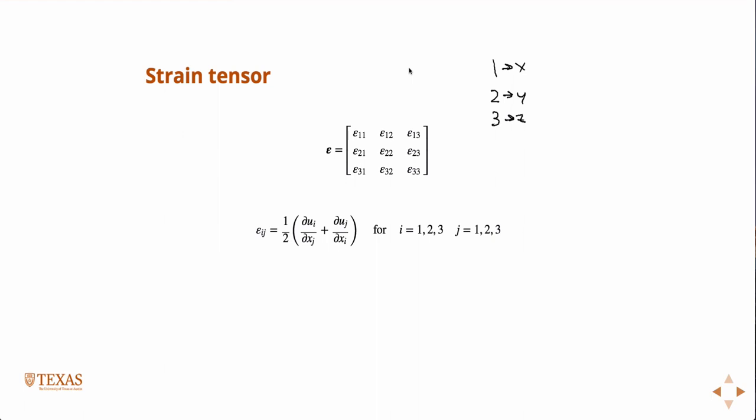And this is why the two becomes convenient, because if the two wasn't there, it wouldn't work for the shear strain component. So let's just pick an I and a J and see what happens.